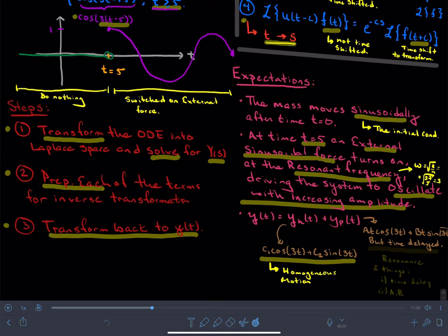And then there is this particular motion that's time-delayed. And this is resonance. What we would need to figure out are two things: what is the time delay, and what are the a and b? Now, because of that time delay and because of the piecewise nature, this isn't really set up for the method of undetermined coefficients. It's a Laplace transform problem.